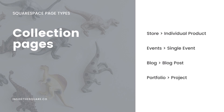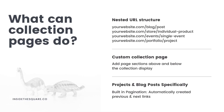Portfolios are a collection of projects. All collection pages have a nested URL structure — that's your website.com/blog/post or your website.com/store/product for example. Collection pages can do a really cool thing in 7.1: while you have the list of collections displayed on that main page, like your storefront or your blog page, every single item is displayed in that list, but you can add page sections both above and below the collection display.